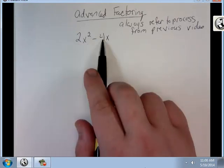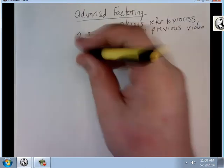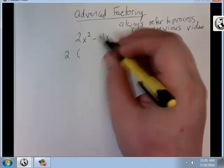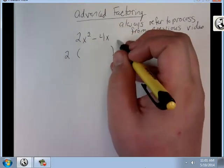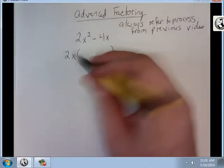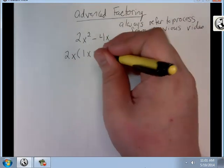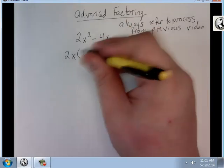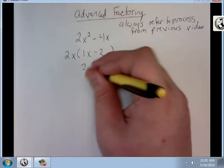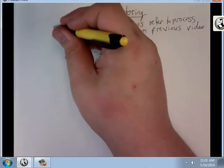Notice how there is a number that can go into both 4 and 2, and that would be 2. But I also have x's in both terms, so I can pull out an x. 2 divided by 2 would just be 1, x squared divided by x is just x. 4 divided by 2 is 2, x divided by x is 1. So this is just 2x times x minus 2. So this is common factor.